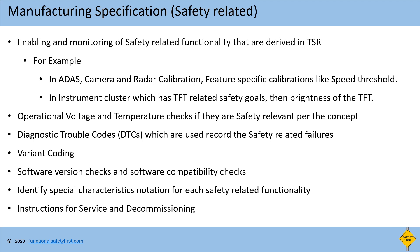Requirements for software version checks to verify the correct software is flashed and software compatibility checks. For example, if the system contains multiple subsystems with independent software and manufacturing, then software version compatibility between all the subsystems is to be ensured. Safety related requirements in the manufacturing specification shall have a clear special characteristics notation for the manufacturing team to ensure the steps taken during manufacturing are sufficient for the verification of safety related functionality. Then requirements and steps for assembling, decommissioning, and servicing of the product which are safety related are to be added.